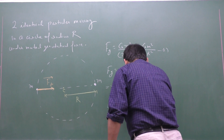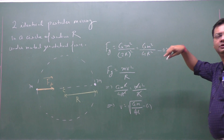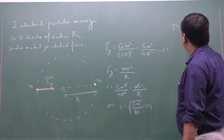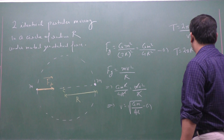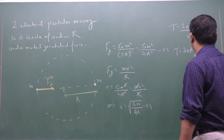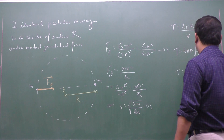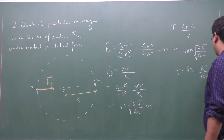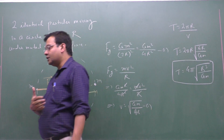If we need to find the time period of the particle, since the motion is uniform circular motion, we apply T = 2πR/V. So T = 2πR / √(GM/4R). The root of 4 is 2, so this gives 4π·√(R³/GM). The time period is 4π·√(R³/GM).